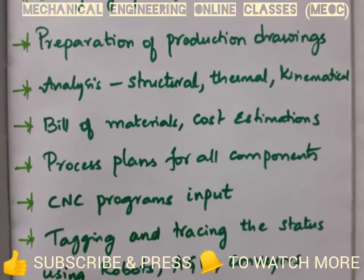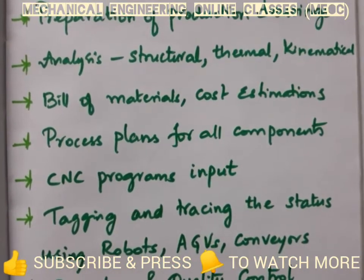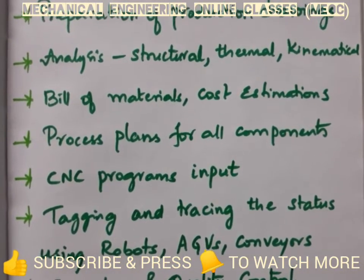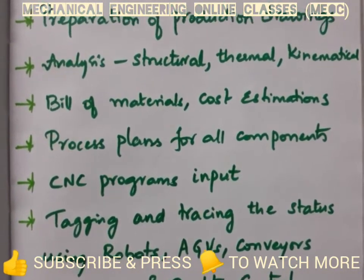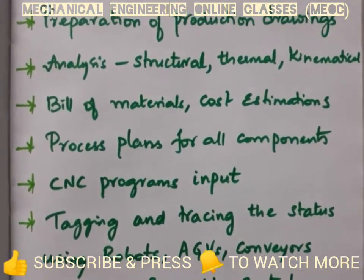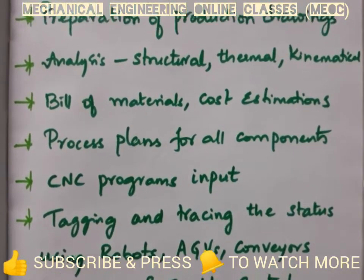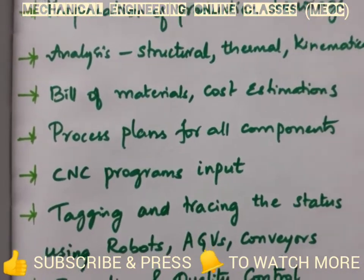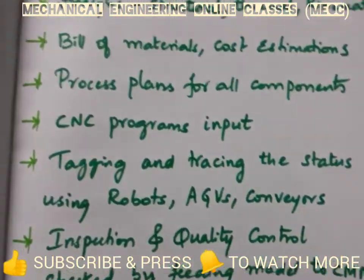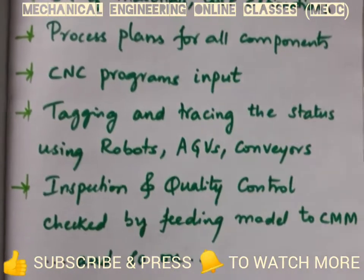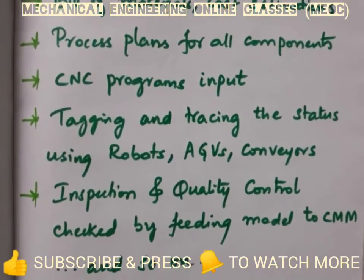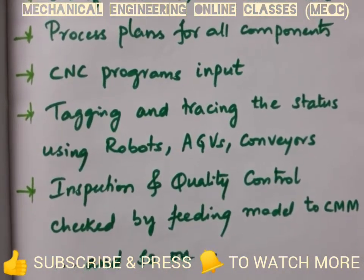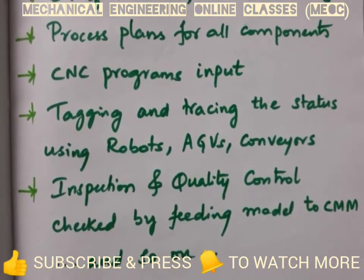Bill of materials, cost estimations, and process plans for all the components are derived from these models. These models are also used as input to CNC programs. They can also be used for tagging and tracking the status of a product — whether it is moving from one station to another or halting somewhere.